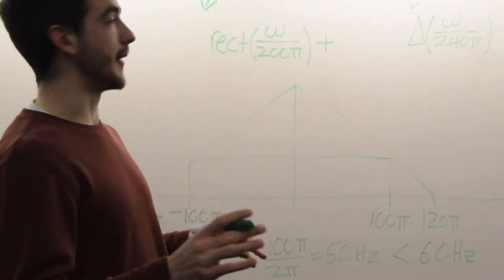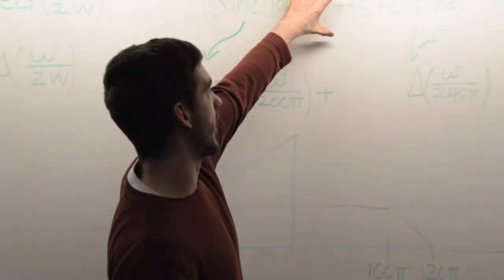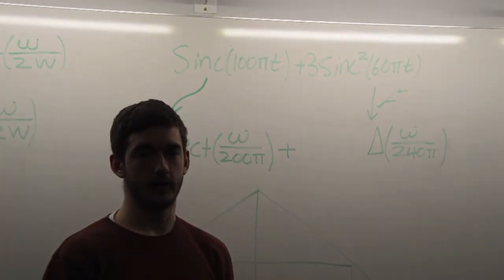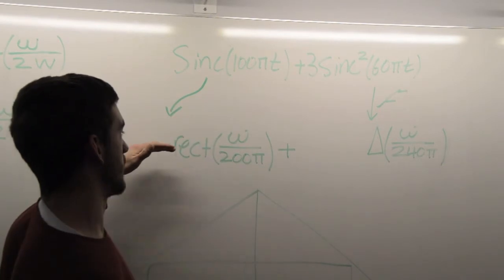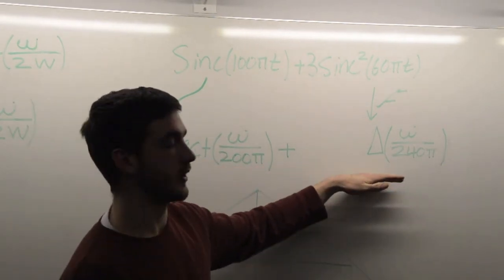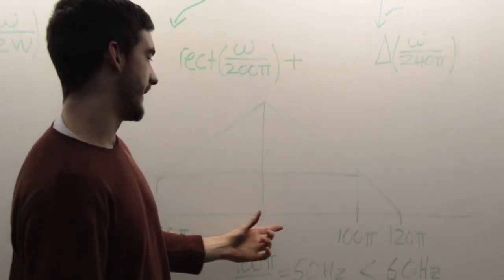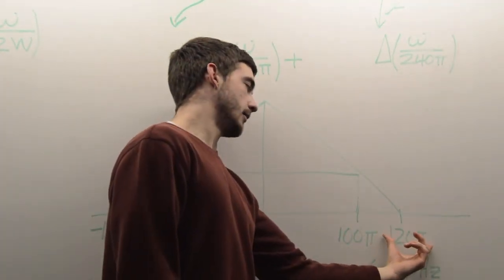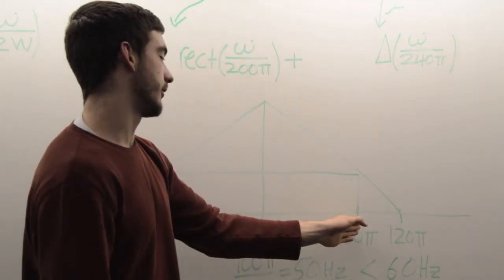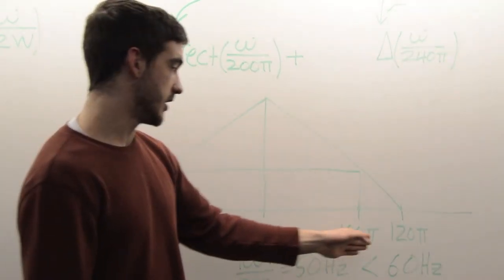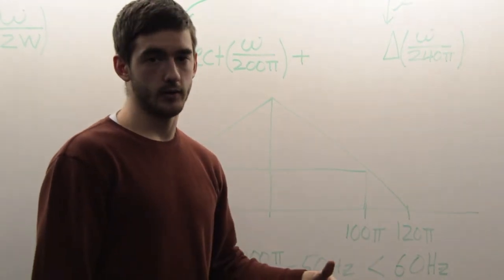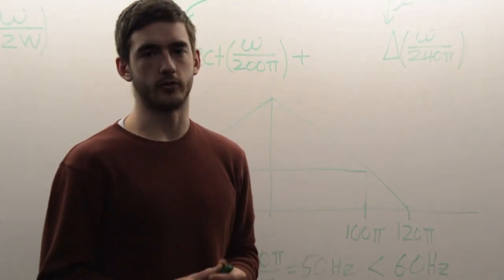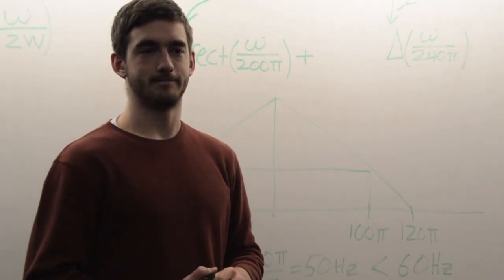Just to sum everything up, we were given a function of the time domain, and we're asked to find the sampling frequency. We knew we needed to take the Fourier transform to figure out the frequency characteristics of it, and we plotted them out. Then we saw that the triangle function had a bandwidth of 60 hertz, and that was higher than the rectangle function of 50 hertz. So we took 60 hertz and multiplied it by 2 to get the Nyquist sampling rate, which is 2 times 60 hertz, 120 hertz. Thanks, I hope this helps.